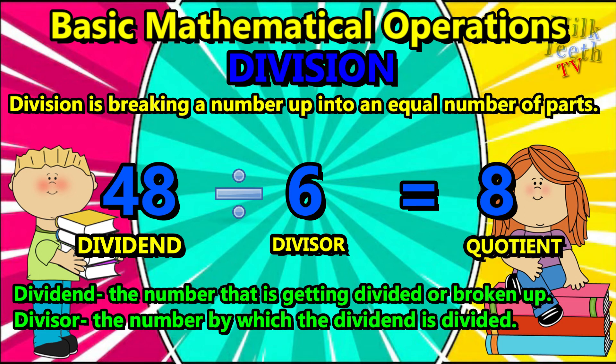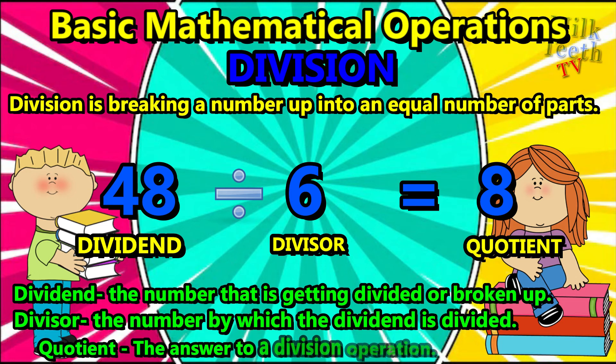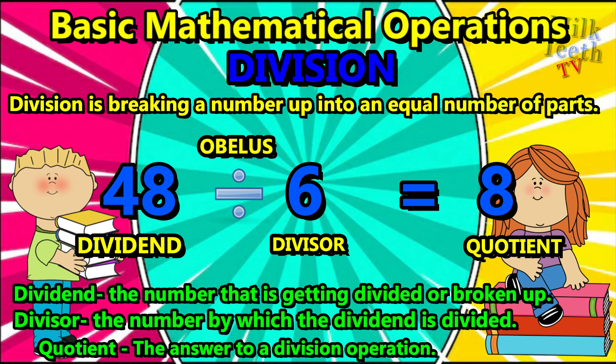Eight is the quotient, which is the answer to a division operation. We use the symbol obelus — a dash with two dots — for division, and the symbol equals to represent the answer.